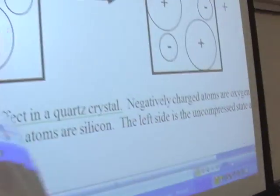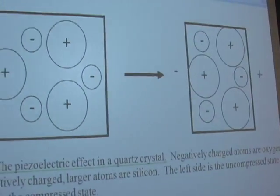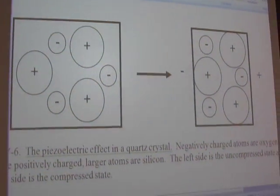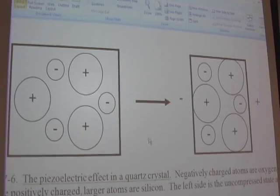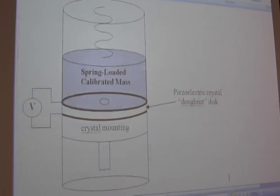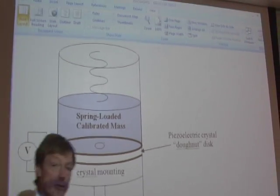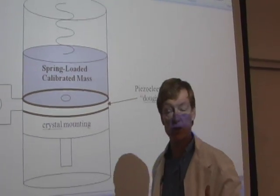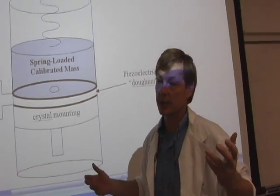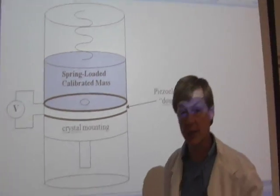So one example of this is the accelerometer. An accelerometer measures changes in acceleration, and units for acceleration would be like meters per second squared or feet per second squared.